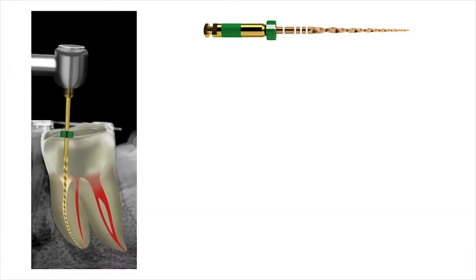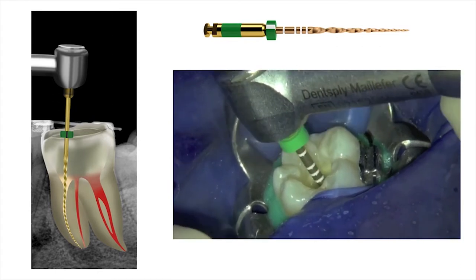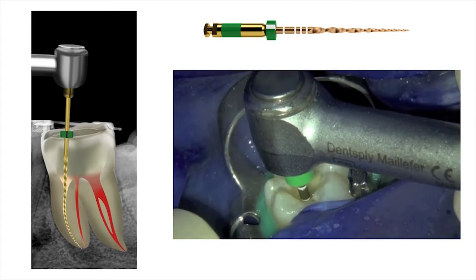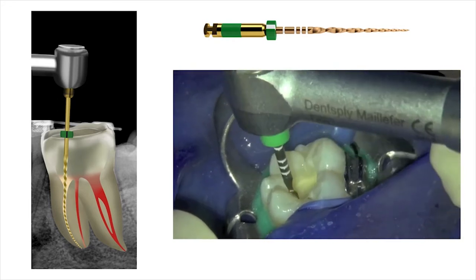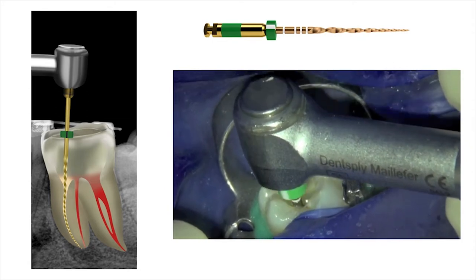A size medium WaveOne Gold reciprocating file was selected for root canal preparation, taking into account the size of the root canals. The access cavity was filled with 3.5% sodium hypochlorite, and here you can see the preparation of the meso-buccal and mesiolingual root canals using the single WaveOne Gold reciprocating instrument.